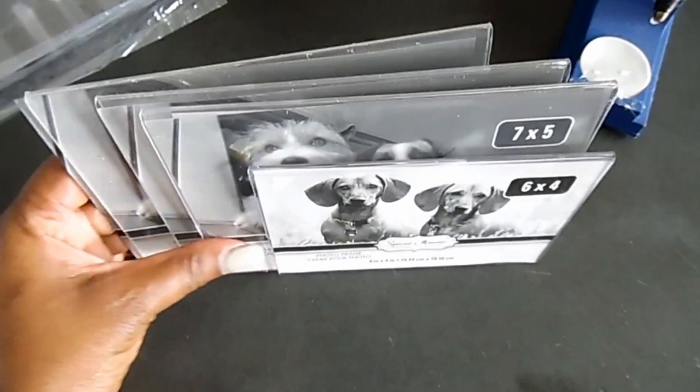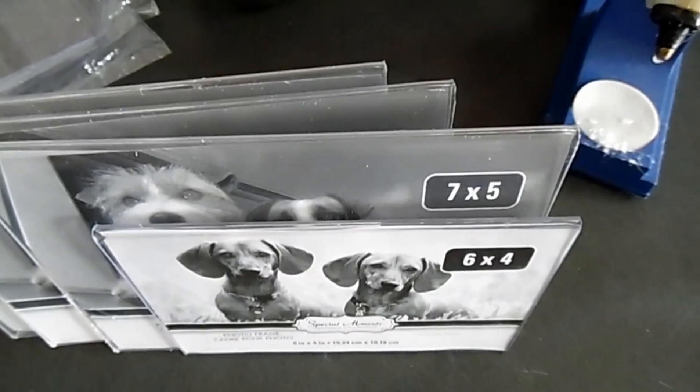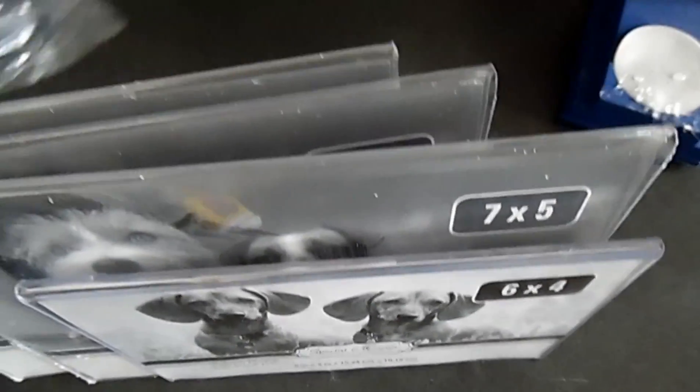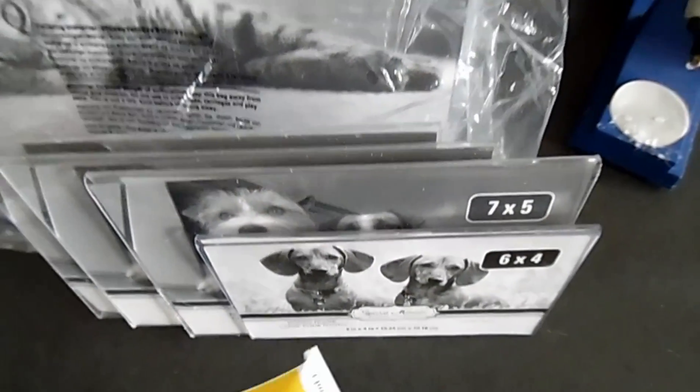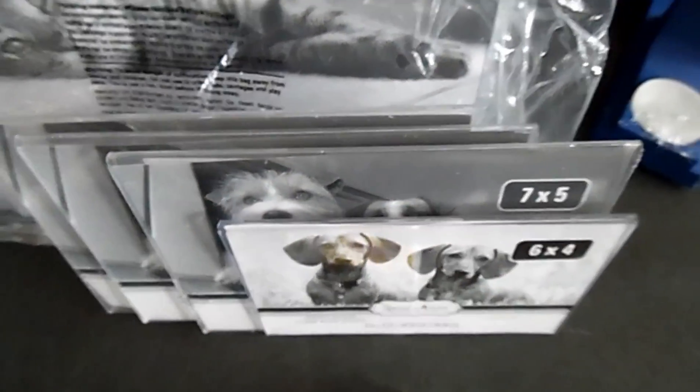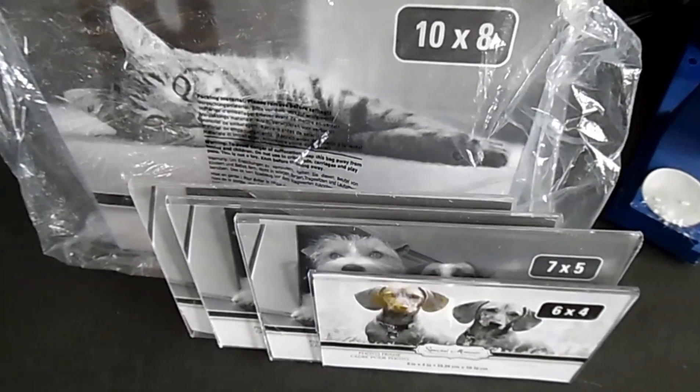What you need are picture frames from the Dollar Tree. I have three seven by fives, then I have one six by four and two eight by tens, and then I have my adhesive glue and my glue gun. So these are all the things that you'll need and we'll get started now.